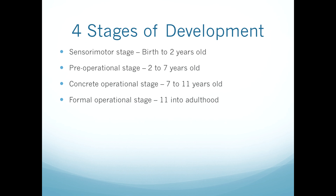Piaget's theory of cognitive and language development concerns itself with four main stages. Each of these stages is marked by changes in how children understand and experience the world around them. The first stage is the sensory motor stage, which generally is present from birth to age two. Next is the pre-operational stage, which occurs in toddlers and during early childhood, or age two to seven. Following that, the concrete operational stage occurs, developing in elementary and pre-adolescence between ages seven and eleven. Finally, the formal operational stage begins in adolescence around the age of eleven and continues into adulthood.